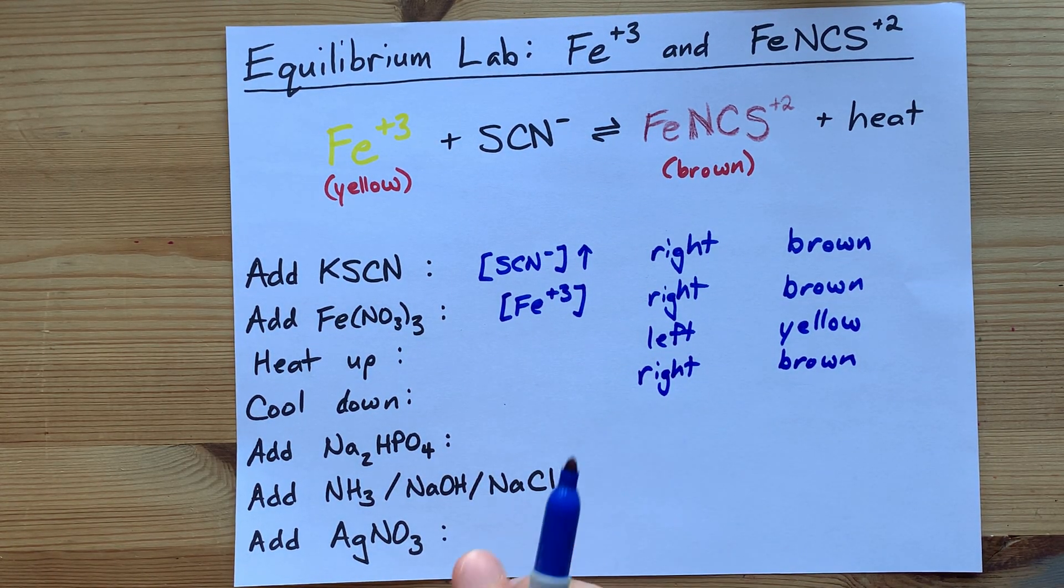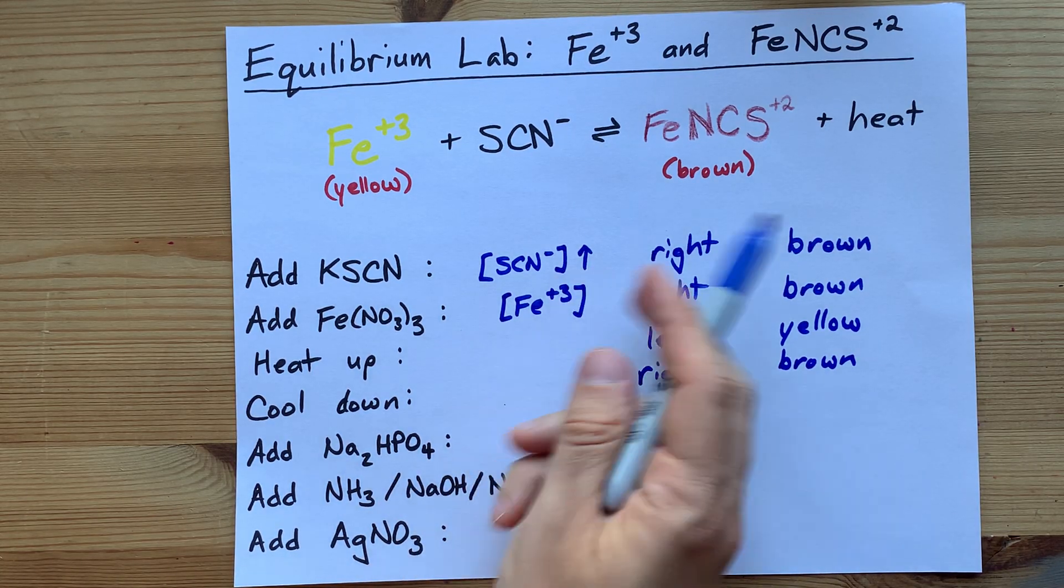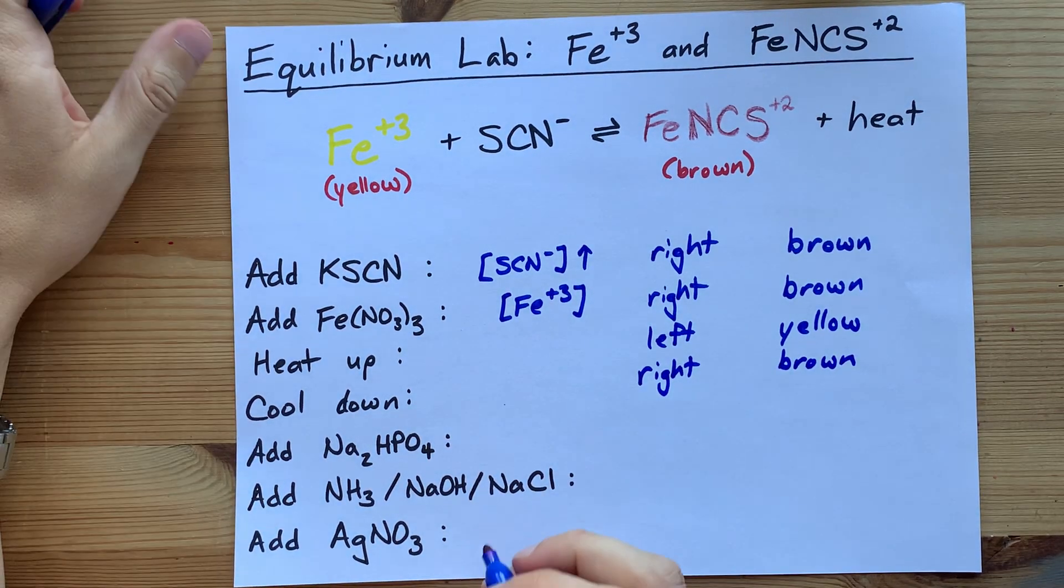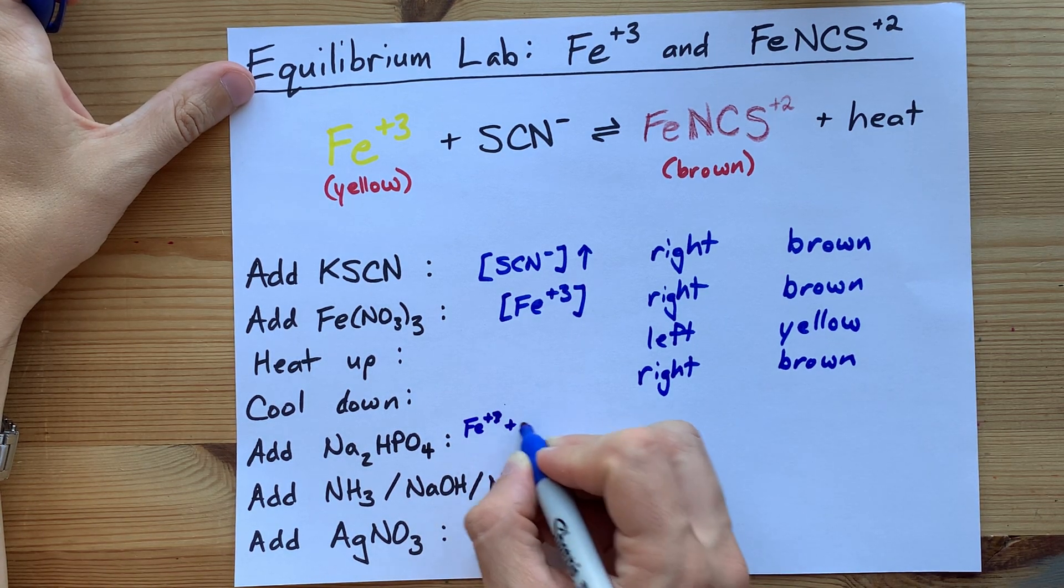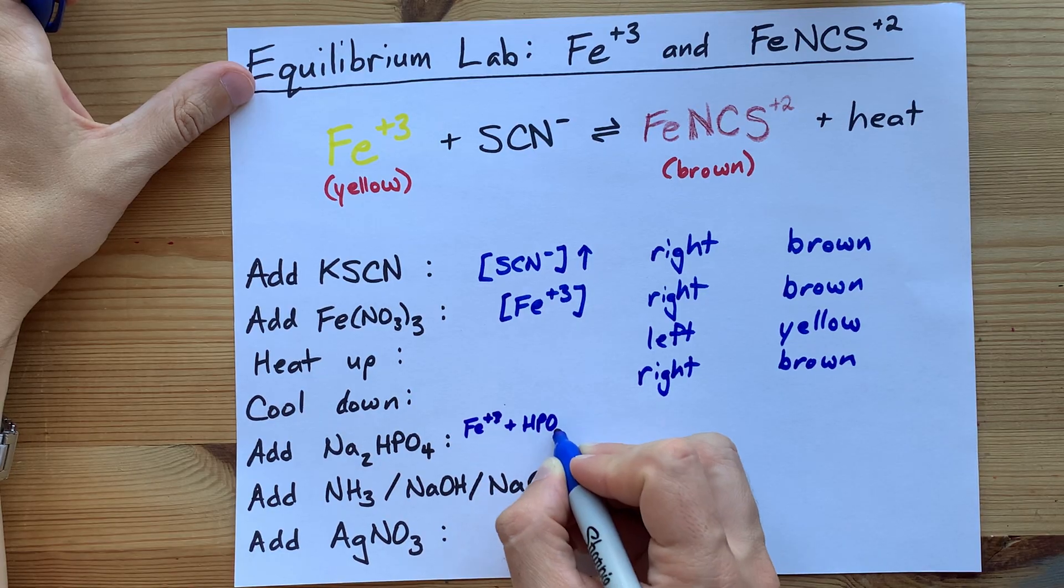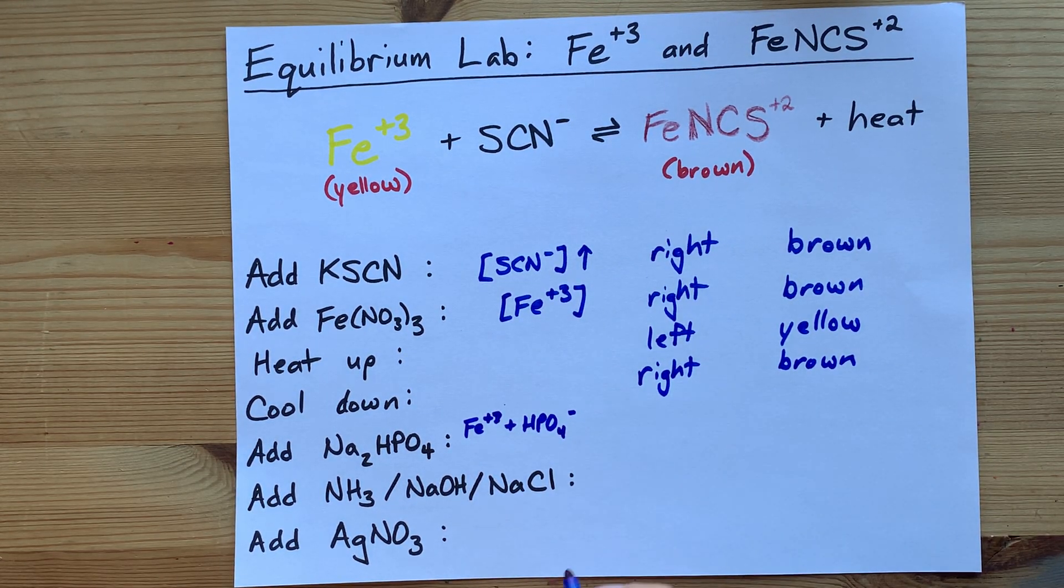Now we come to the trickier ones. When you add Na2HPO4 to this equilibrium, what's actually going to happen is that the Fe plus 3 ions will combine with the HPO4 minus ions and create its own complex.